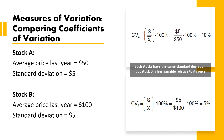Here you can see the comparison of the coefficient of variation between stock A and stock B. Both stocks have the same standard deviation, but stock B is less variable relative to its price.